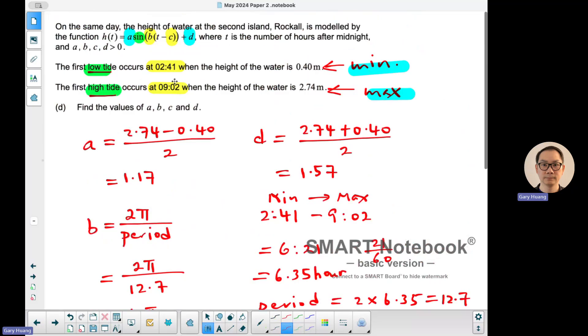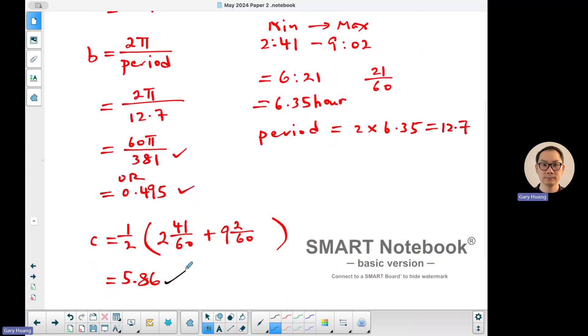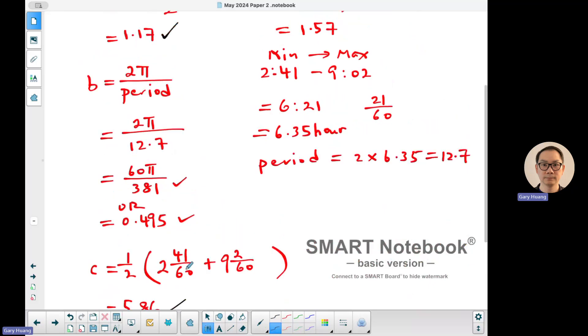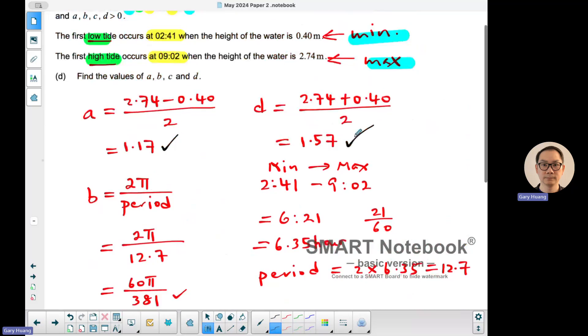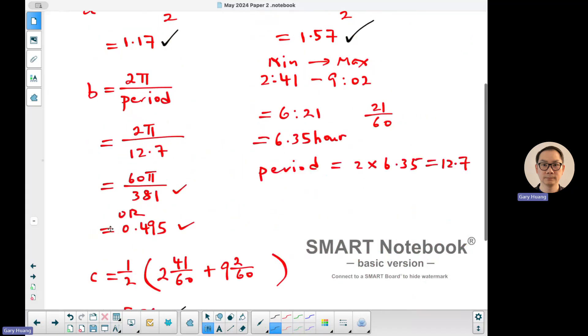So our model has A equals 1.17, B equals 0.495, C equals 5.86, and D equals 1.57. If I rewrite the equation, H(t) equals 1.17 sine of 0.495 times (t minus 5.86) plus 1.57. Now moving on to part E.